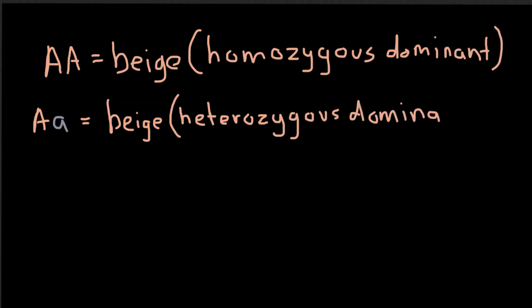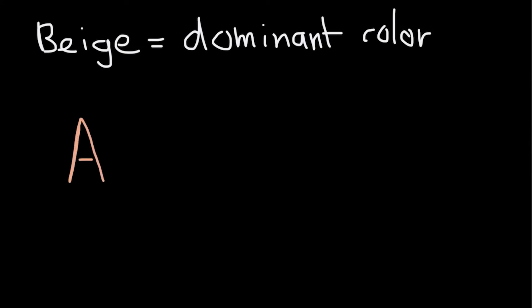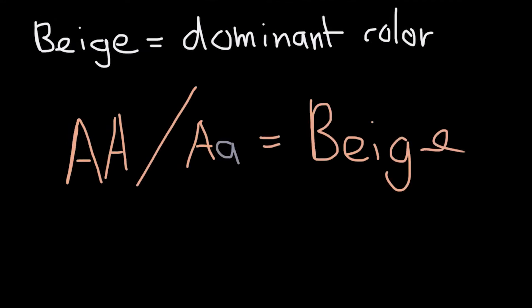So if it was big A big A, the color is going to be beige. If it's big A little a, the color is still going to be beige. But if it's little a and little a, the color is going to be violet. So as you can see, big A big A and big A little a would both mean beige chinchilla. It only takes one dominant allele to determine the color.